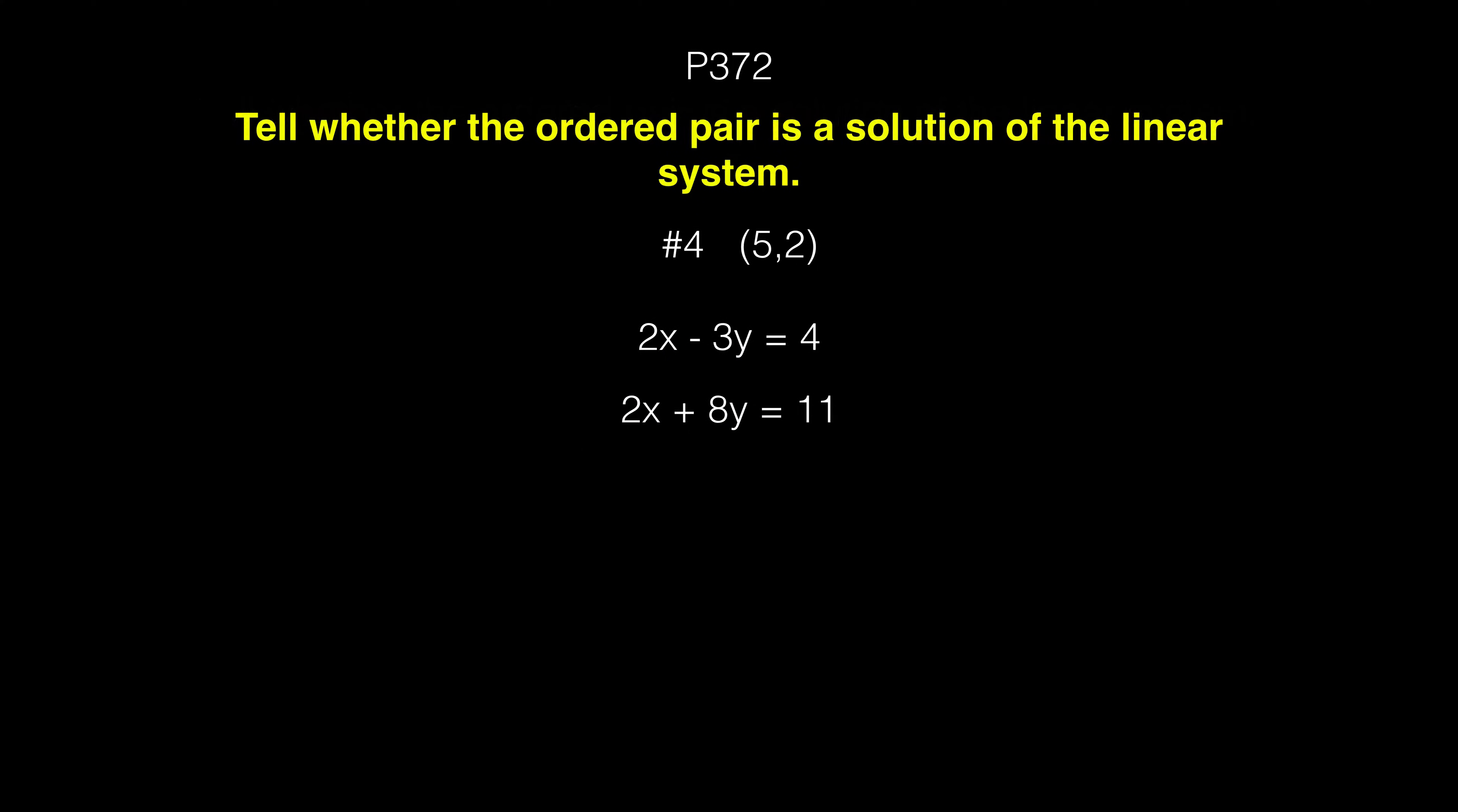Welcome to another video for Algebra 1. We're dealing with 6.1 still, page 372, number 4. The instructions are to tell whether the ordered pair is a solution of the linear system. For number 4, we have an ordered pair (5, 2).